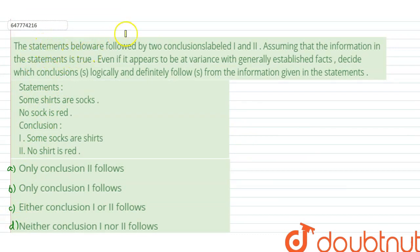The statements below are followed by two conclusions, labeled I and II. Assuming that the information in the statements is true, even if it appears to be at variance with generally established facts, decide which conclusion logically and definitely follows from the information given in the statements.